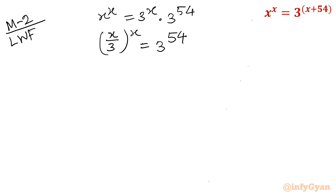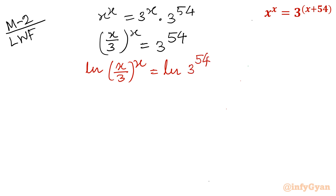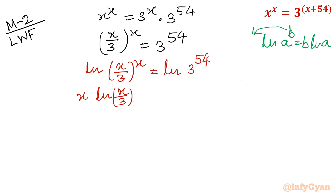Now I take ln of both sides. Using the logarithm property ln(a^b) = b·ln(a), the power comes down as a coefficient, giving x · ln(x/3) = 54·ln3.